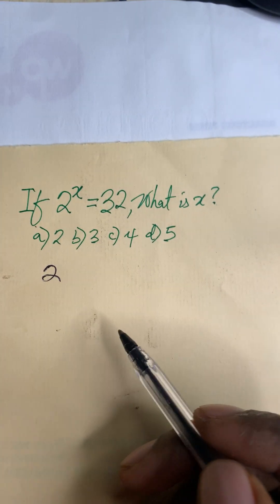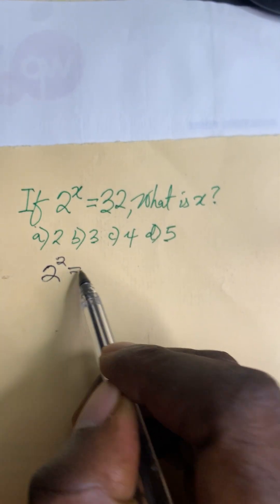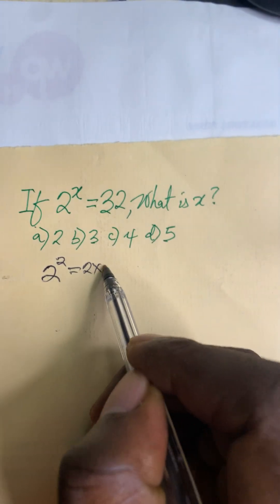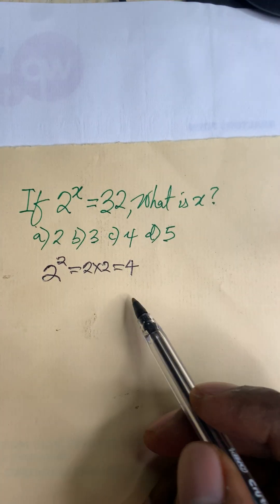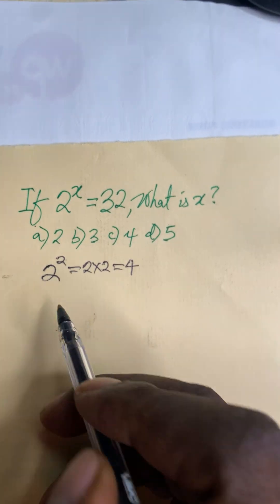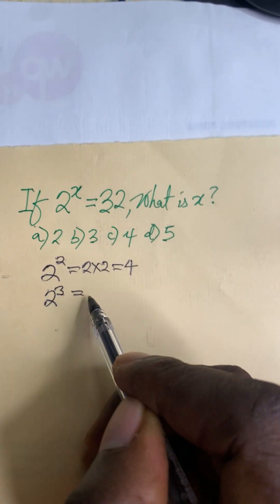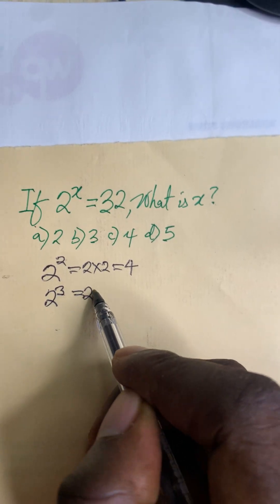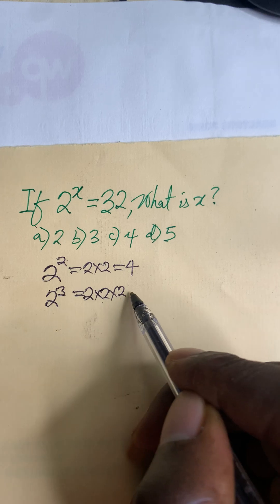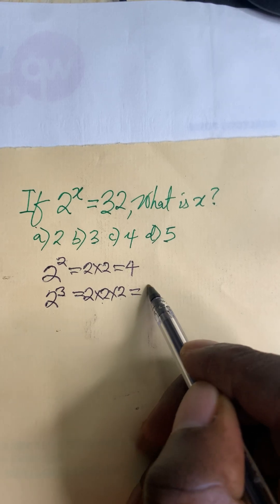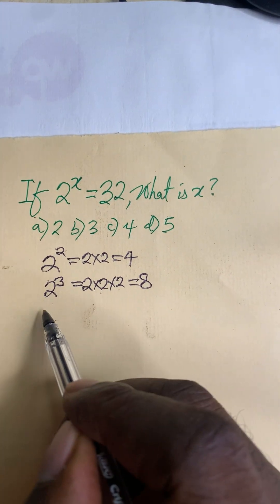2 to the power of 1 — that's just normal 2. Then 2 to the power of 2 means 2 times 2, which gives 4. But 4 is not close to 32. So we raise the power to the next number: 2 to the power of 3 means 2 times 2 times 2, which is 4 times 2 = 8. But 8 is not close to 32 either.